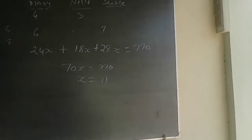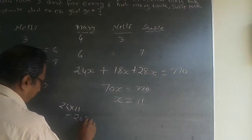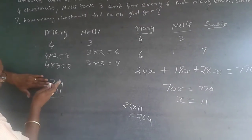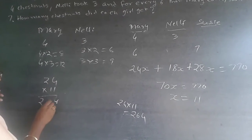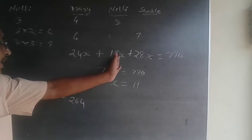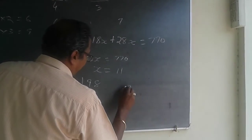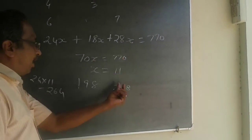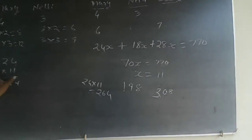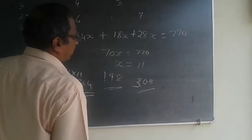Once you know x is 11, they ask for how much each girl will get. Mary will be getting 24 into 11, which will be 264. The easier way of doing multiplication by 11: whenever you get 2 numbers multiplied by 11, right hand side will be 4, left hand side will be 2, center will be 2 plus 4 equals 6. 18 into 11: right hand side will be 8, left hand side will be 1, this will be 198. Here, 28 into 11: right hand side is 8, left hand side will be 2. When I add 2 plus 8, this will become 10. I cannot write 10 in between, so this will become 0 and this will be 308. Mary will be getting 264, Nelly will be getting 198, and Susie will be getting 308.